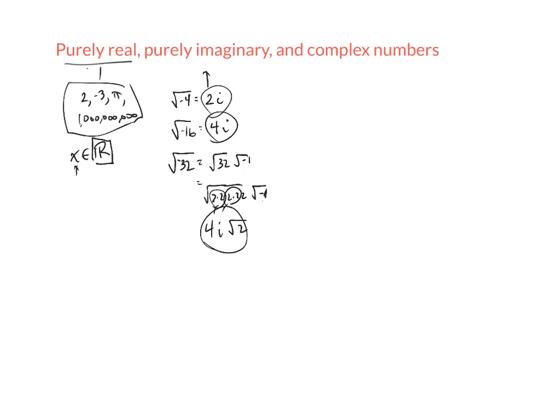Now, there are numbers called complex numbers. In order to understand complex numbers, you need to know they come in two parts. Complex numbers will have a real part, which is purely real, and an imaginary part, which is purely imaginary. So you may see things like 5 plus 7i, or 2 minus 3i. Those are individual complex numbers.